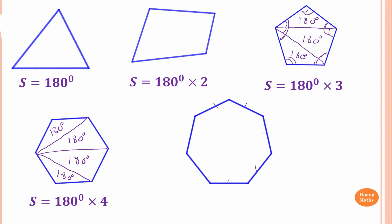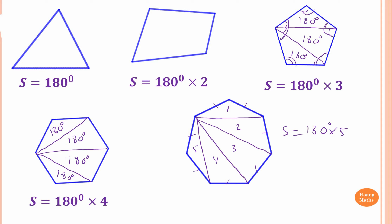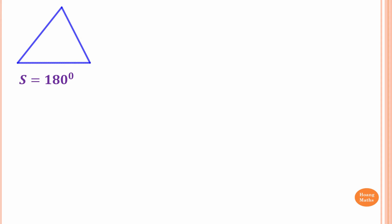What about this one — a polygon with 7 sides? Using the same process, I connect from this angle to this angle, cutting it into triangles: from here to here, from here to this angle, and from this angle to this angle. We get 1, 2, 3, 4, 5 triangles. So the sum of interior angles equals 180 degrees times 5. That's the sum of angles of this 7-sided polygon.